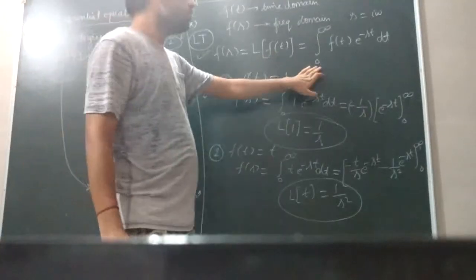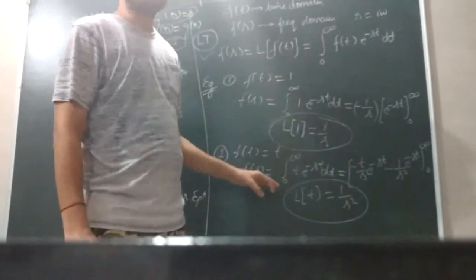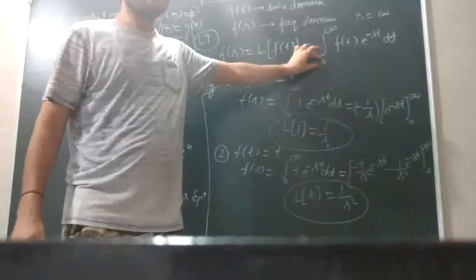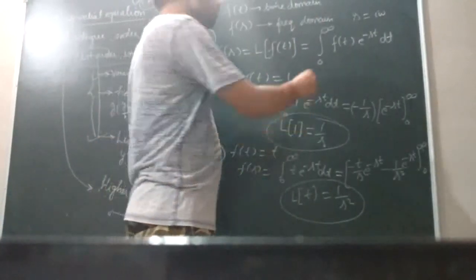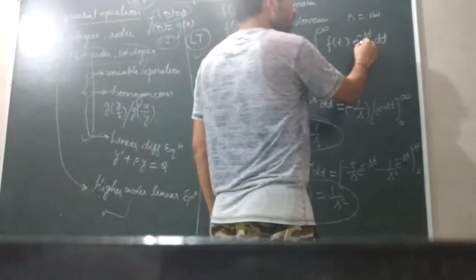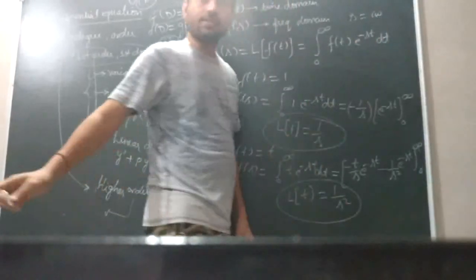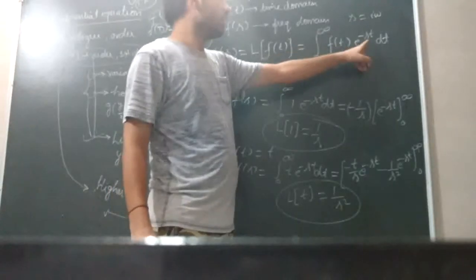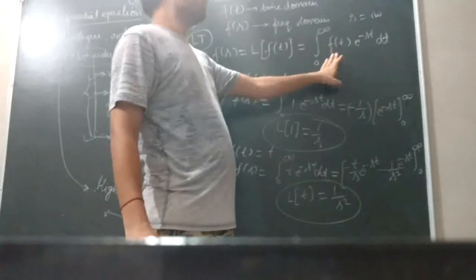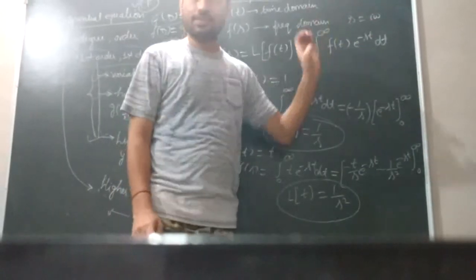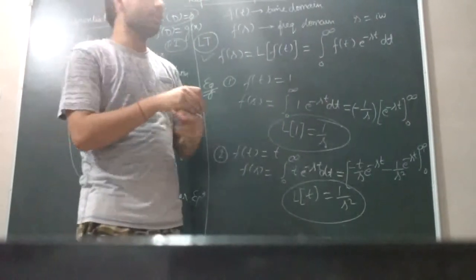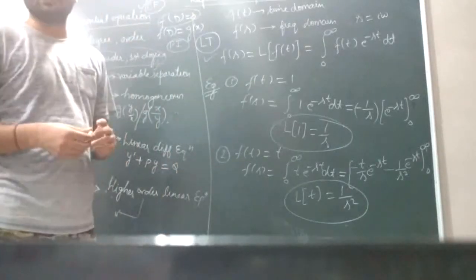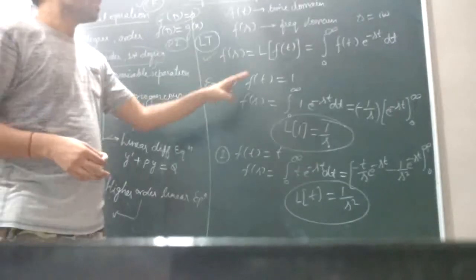Now, how do we define the Laplace transform F(s)? We define F(s) equals the Laplace transform of f(t), which is the integral from 0 to infinity of f(t) times e to the power minus st dt. The lower limit is 0 and the upper limit is infinity. S indicates the frequency of the Laplace transform, and the kernel function is e to the power minus st. Integrating from 0 to infinity gives the Laplace transform.